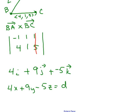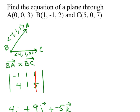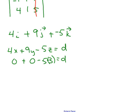The equation of my plane is 4x + 9y − 5z = d. To find the constant d, I can use any of the three points. The easiest is point A, which has the most zeros: when x = 0, y = 0, z = 3, I get d = −15. So the equation of the plane is 4x + 9y − 5z = −15.